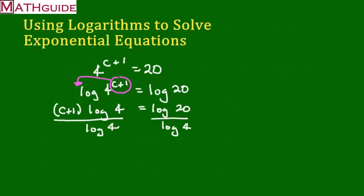The reason to do that was to cancel the log of 4 on both sides. So the only thing left on the left side is the c plus 1. Here on the right side, I'm getting quite a mess. I'm getting this log of 20, and the log of 4 as the denominator. So I get this weird-looking fraction.